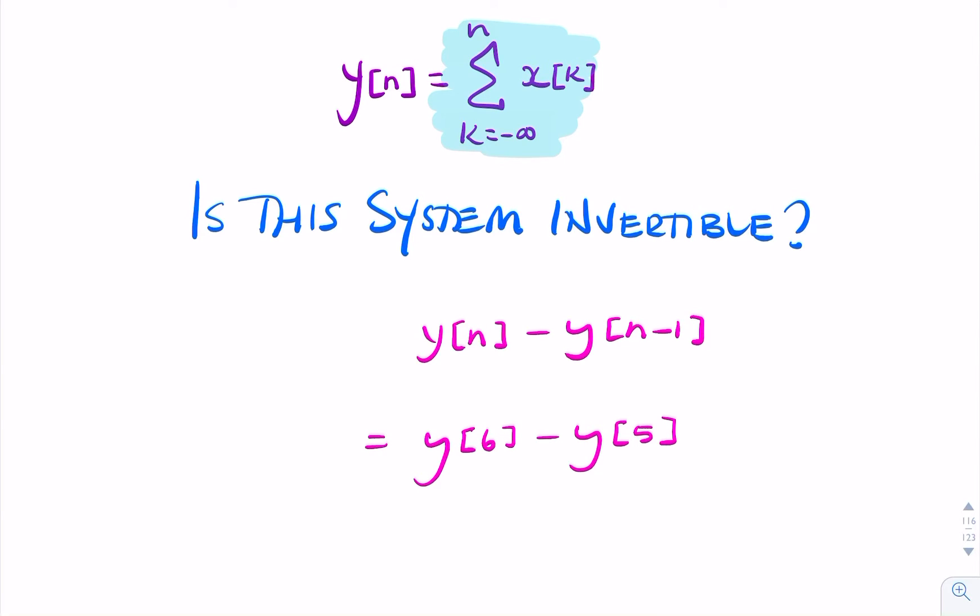So y of 5 is a summation of all the values of x until the instant n equals 5. And y of 6 gives you all the values of x added up until the instant n equals 6. So if you subtract the two, what you get is x of 6.